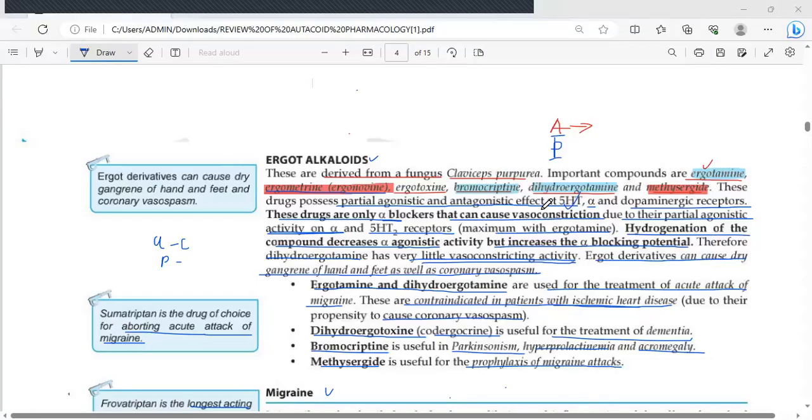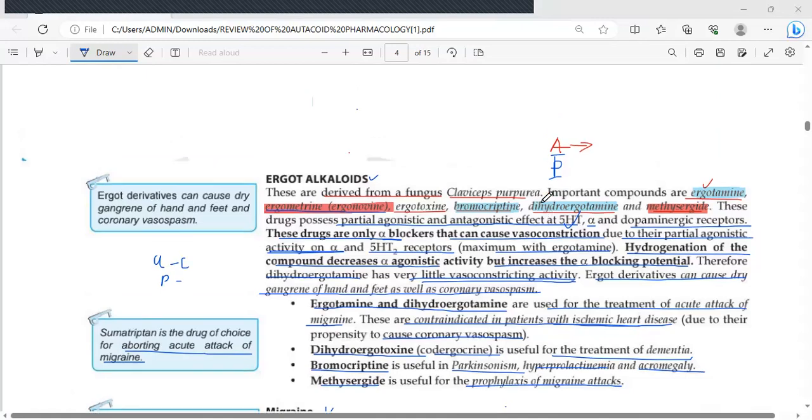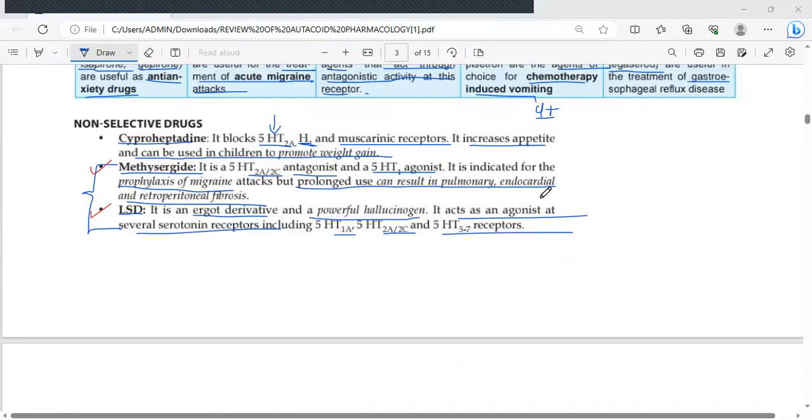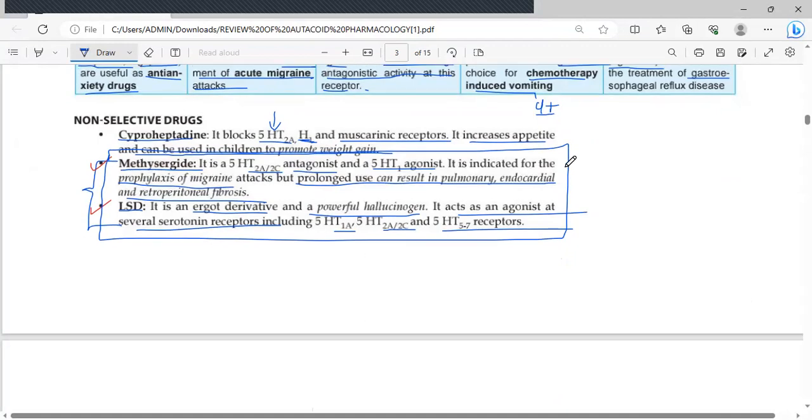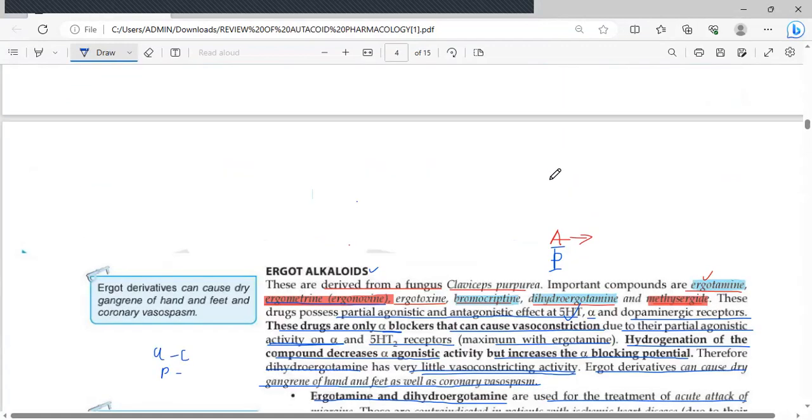Welcome guys. In the previous session, we discussed serotonin. But when I was concluding about serotonin, I mentioned these two drugs: methysergide together with lysergic acid diethylamide, LSD. And I told you these two are known as ergot alkaloids. Now today, we'll be looking at ergot alkaloids.